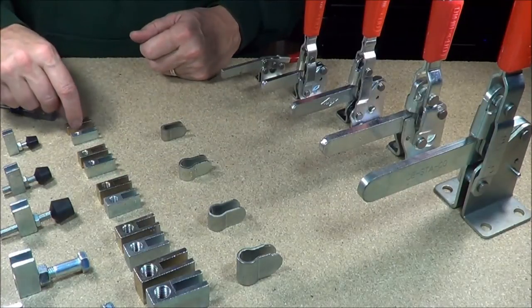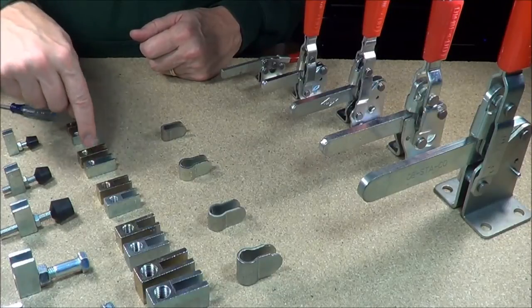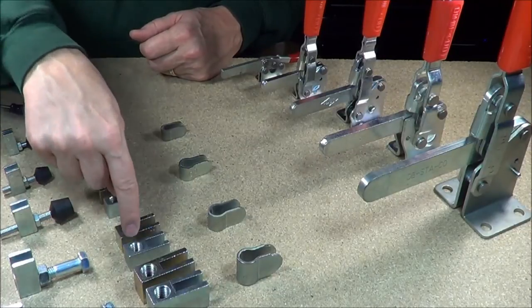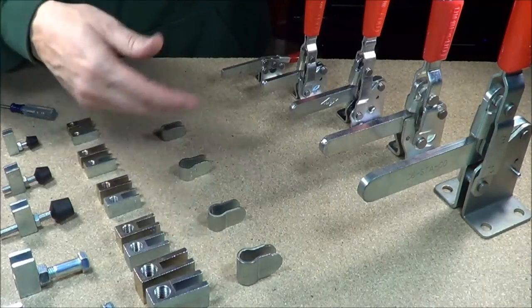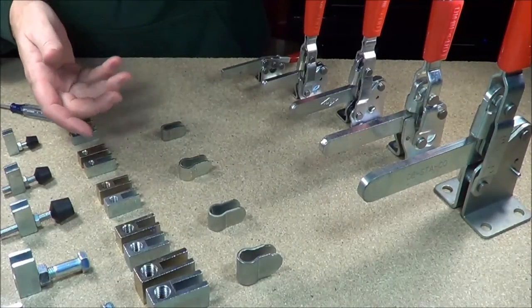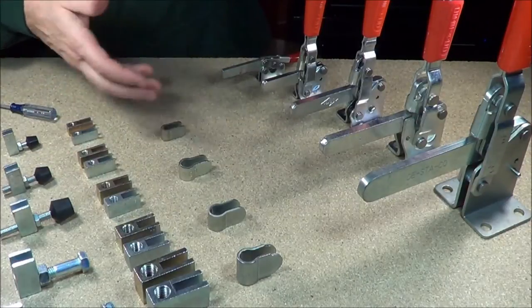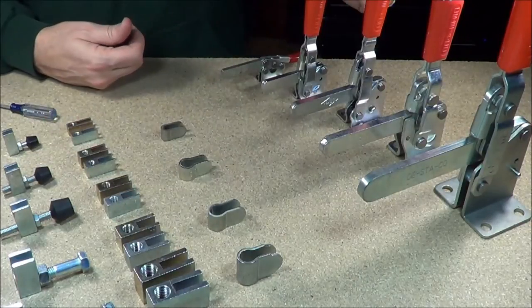Basically the silver ones are the English. This is quarter inch, five sixteenths, three eighths, half inch, and five eighths. So you can have English or metric. It depends on if your shop is into English. Fine, stay with English. If your shop is into metric, you can use the metric ones.